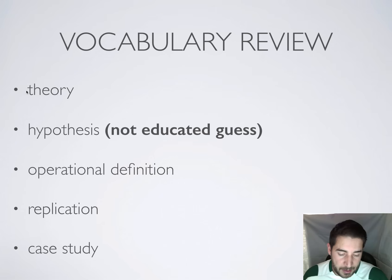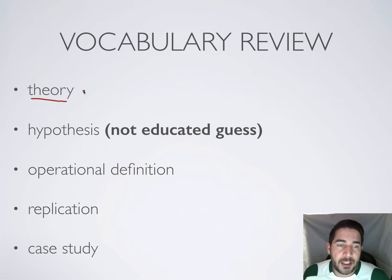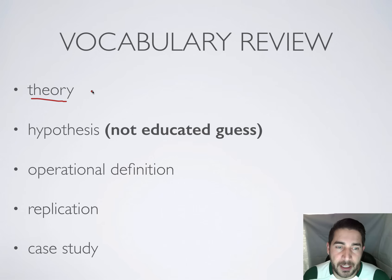So number one is theory. Theory — our book has a long explanation, but it's just our best explanation for something. Best explanation.